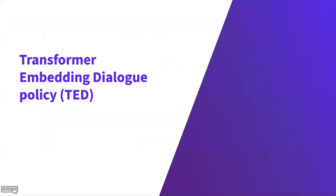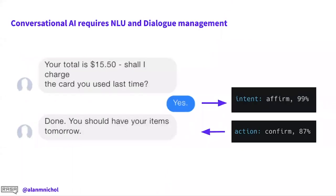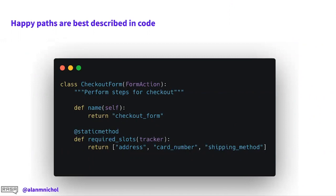That brings us to the second piece: the dialogue model. I'm going to talk about the Transformer Embedding Dialogue policy — TED — which is a model we published a few months ago. So once messages come in, what's the next thing we should do — how should we respond? Should we make an API call, ask another question, or just answer the user's question?